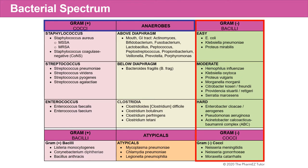The hard-to-hit gram-negative bacilli include Enterobacter, Pseudomonas aeruginosa, and Acinetobacter calcoaceticus baumani complex, known as ABC. There's also a group of gram-negative cocci, which is small in number but very important to mention. They include Neisseria meningitidis, Neisseria gonorrhea, and Moraxella catarrhalis. We'll move on and talk more specifically about each of these bacteria.